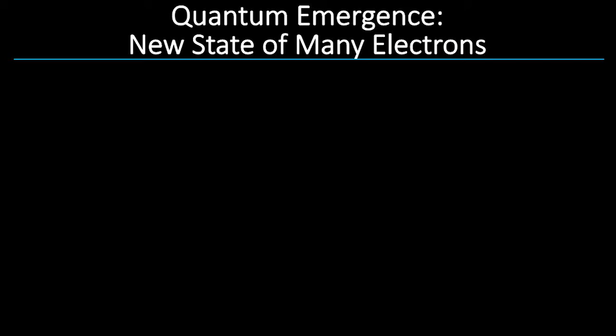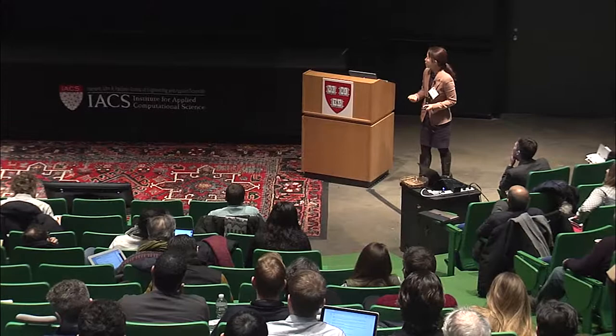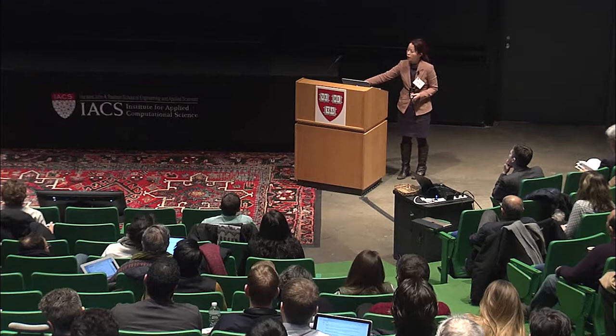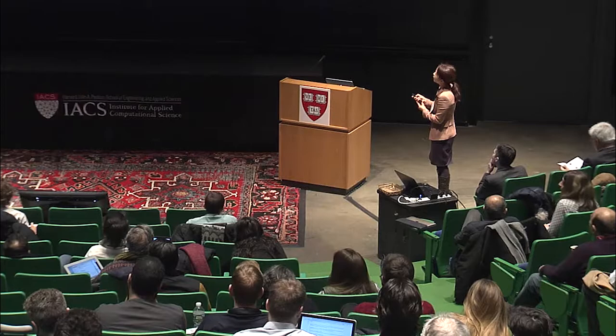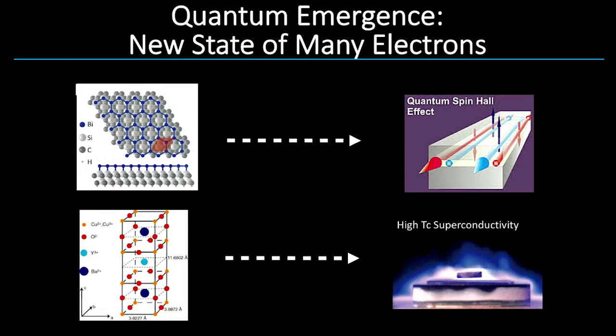When I first started thinking about what I want to study as a physicist, I realized that studying something that is manageable in size, where I understand the properties of the individuals—electrons are fundamental particles, after all—would be something that is satisfying. The different states of quantum emergence that we now understand include systems exhibiting topological phase and high temperature superconductors.